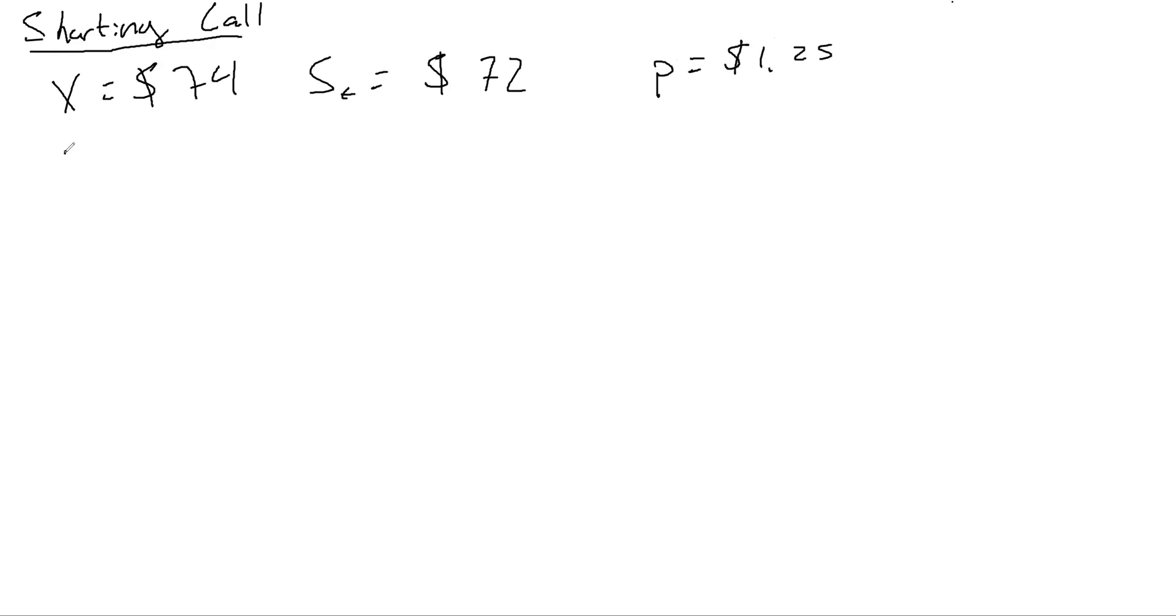So let's say for part A, we want to know intrinsic value and time value. How much of the option premium is due to intrinsic value versus time value? So remember for a call option, intrinsic value can be written with a max function of stock price minus exercise price, comma zero. So it's always going to be non-negative.